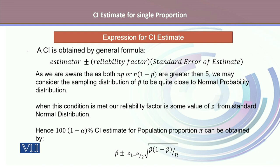An expression for the confidence interval can be obtained by the estimator plus or minus the reliability factor multiplied by the standard error of the estimate. When both np and n(1-p) — the parameters of the binomial distribution — are greater than 5, we may consider the sampling distribution of p-hat to be quite close to the normal probability distribution. The exact distribution would be binomial, but when np or n(1-p) is greater than 5, it approximates to the normal distribution.